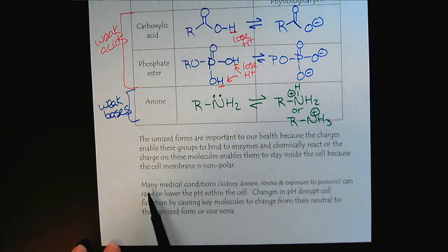Additionally, many medical conditions—kidney disease, stroke, exposure to poisons—can raise or lower the pH within the cell. Now we can recognize that if we have changes in the pH, that can disrupt the cell function by causing these key molecules or key functional groups to change from their neutral to their ionized state or vice versa.